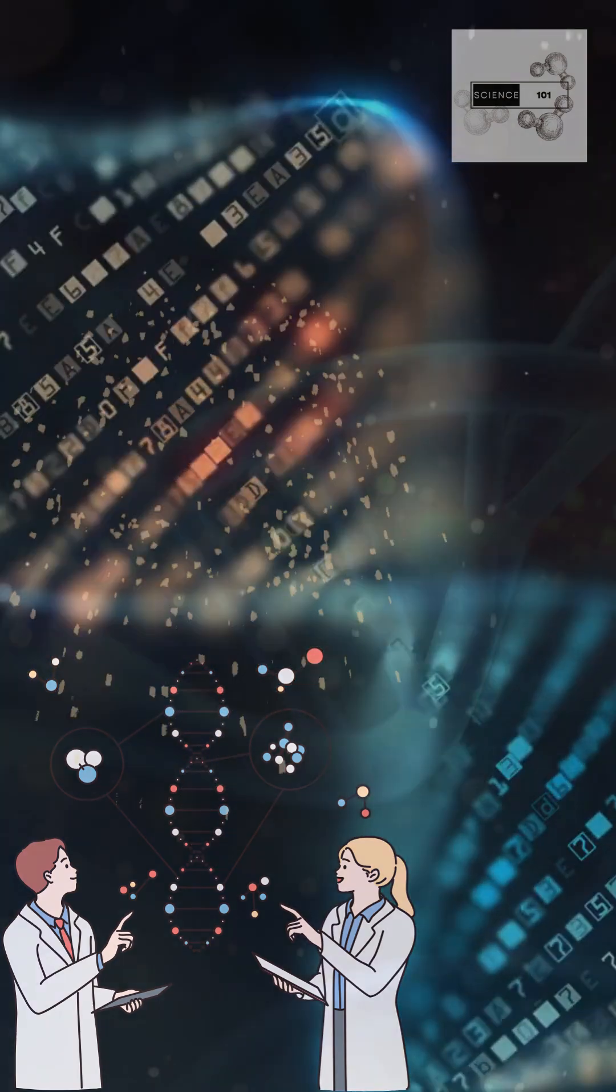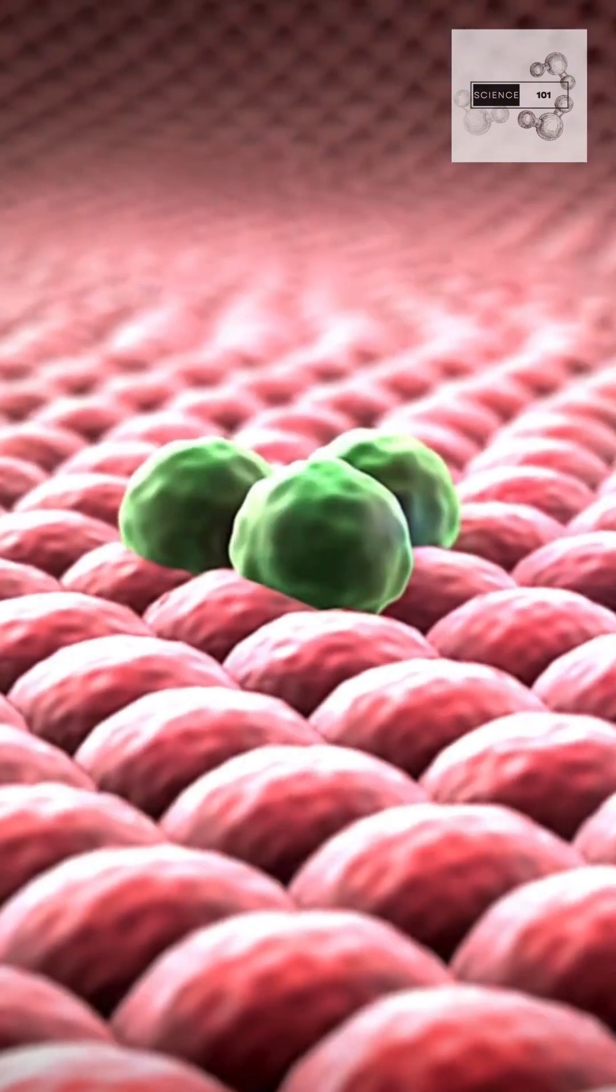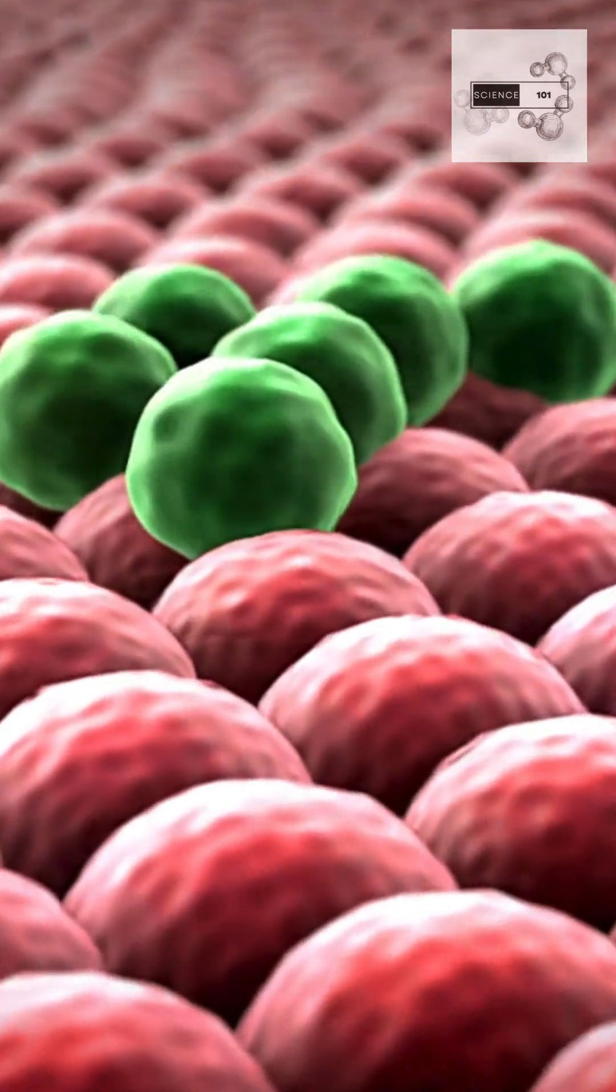This keeps stem cells and some immune cells functioning longer. But in cancer cells, telomerase goes rogue, letting them divide forever.